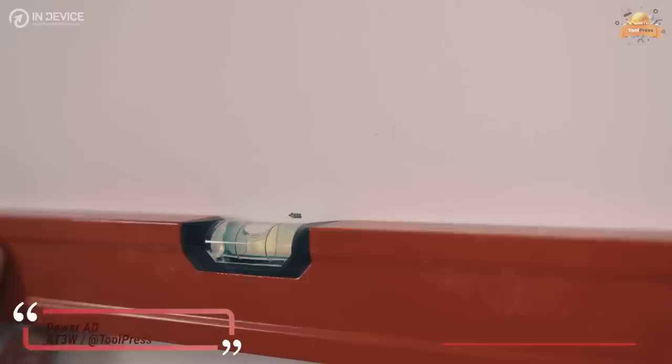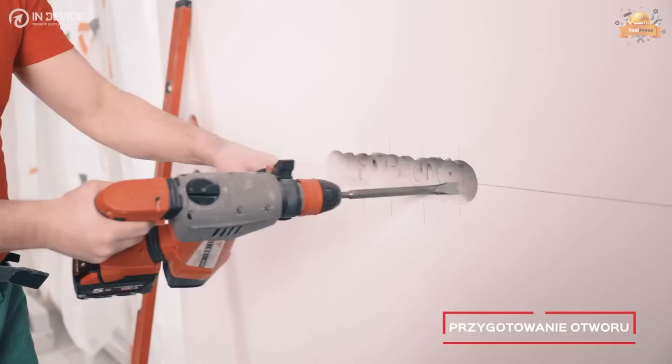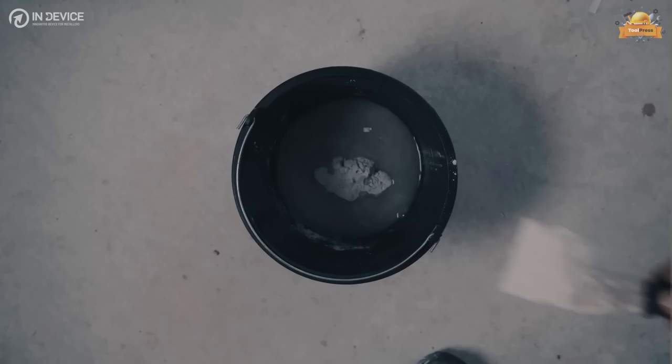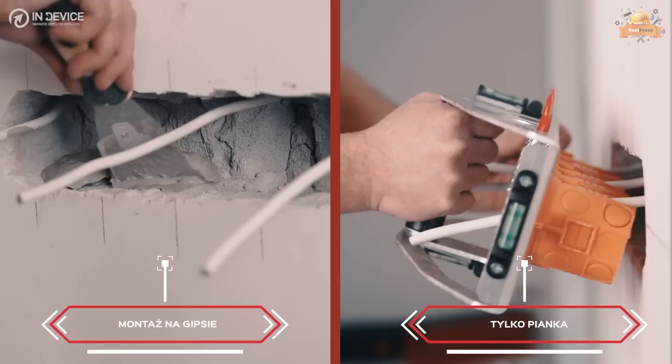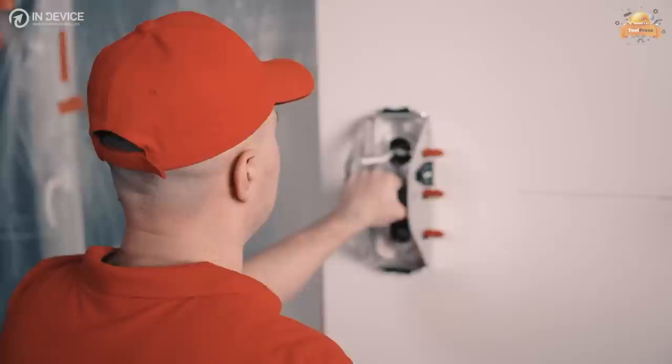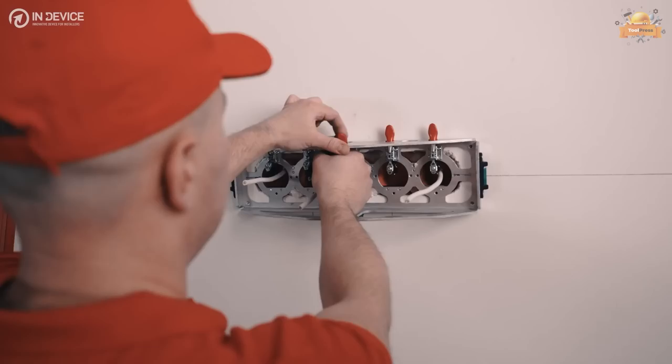In Device Power AD is a set that allows you to mount four boxes at the same time, vertically or horizontally. The holder for a row of four boxes is designed for the installation of flush mounted boxes. The materials from which it was made are resistant even in extremely difficult construction conditions, for all types of boxes regardless of the manufacturer. The device can be mounted in vertical and horizontal positions. It includes a spirit level ensuring the correctness of the work performed. Its comfort is ensured by its low weight and ergonomic shape.